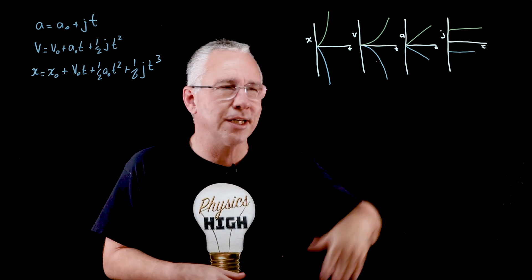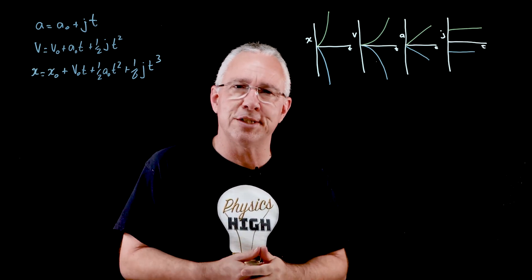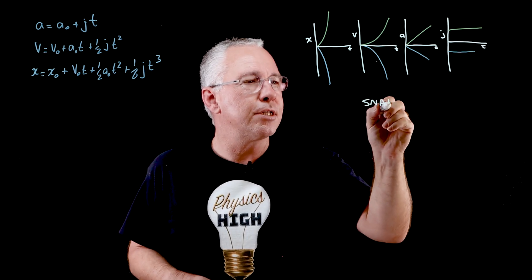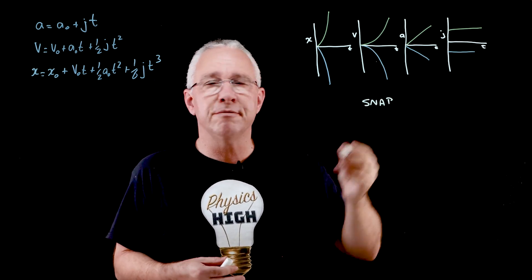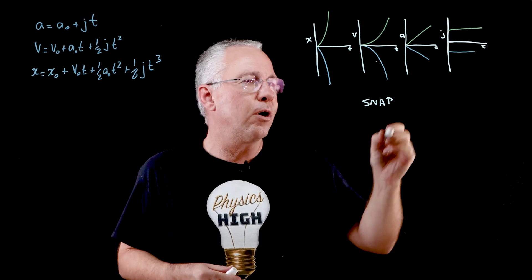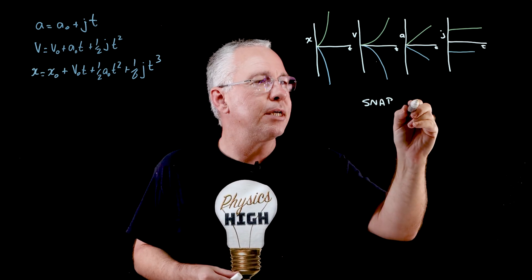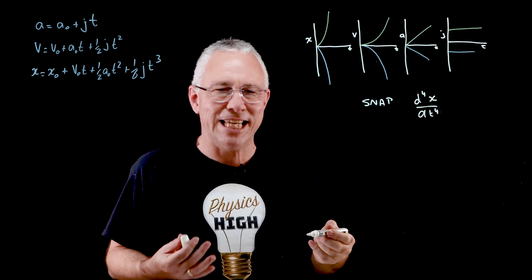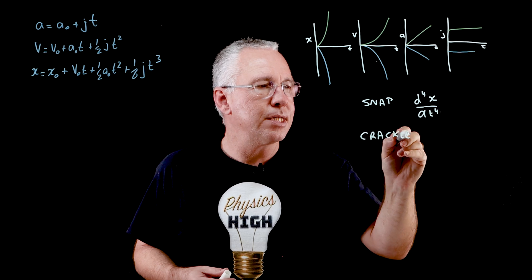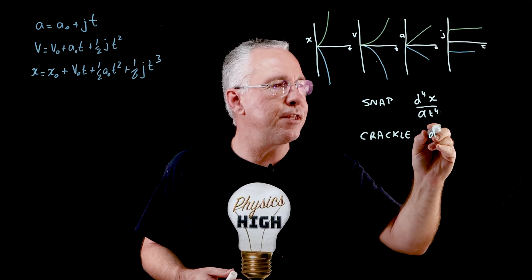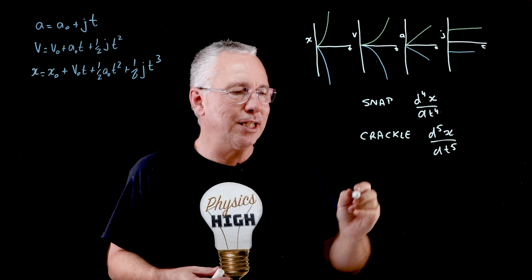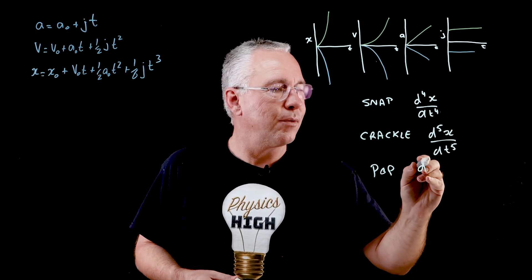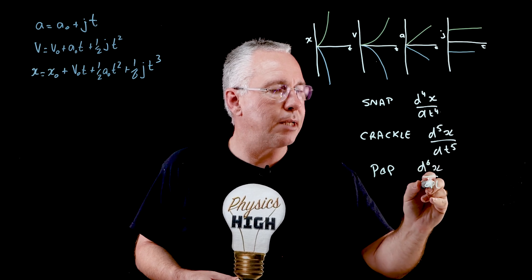Can we go further? Can my jerk be constantly changing? Yes, it can, and that is called the snap — the derivative of jolt, or the fourth derivative of displacement. Can I go further? Yes, that's the crackle — the fifth derivative of displacement. And you can guess what the next one would be: that is the pop, which is our sixth derivative of displacement.